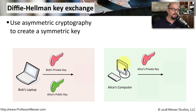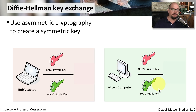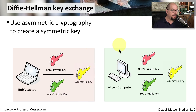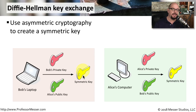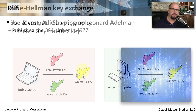The public keys are available for anyone. So Bob can get a copy of Alice's public key very easily, and Alice can get a copy of Bob's public key very easily. If Bob combines his private key and Alice's public key, he will get a symmetric key. And if Alice combines her private key and Bob's public key, she gets exactly the same symmetric key that Bob was able to derive. This is the benefit of Diffie-Hellman key exchange: both devices are able to derive exactly the same symmetric key without ever having to send that symmetric key to each other.